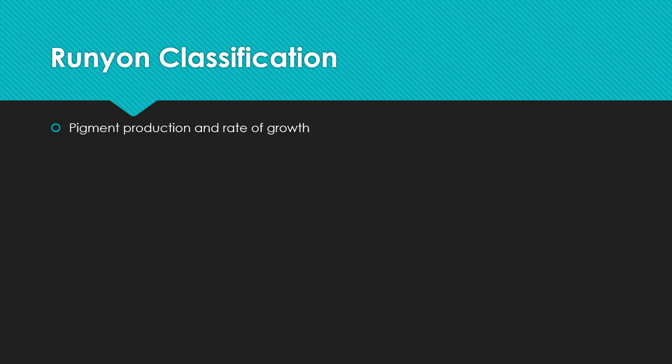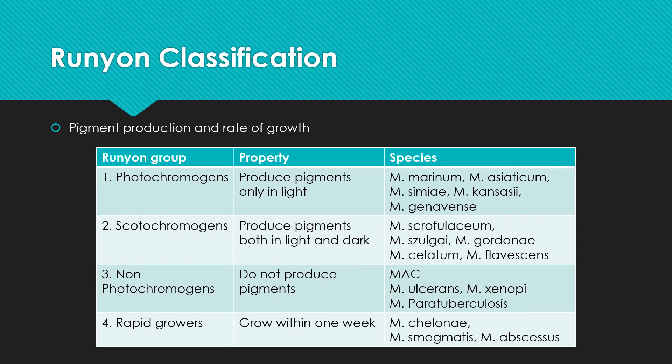Here is the Runyon's classification. This classification is based on pigment production and rate of growth, and has four broad groups. The first one is the photochromogen. Photo means light, so the photochromogen has a property where it produces pigment only in the presence of light.